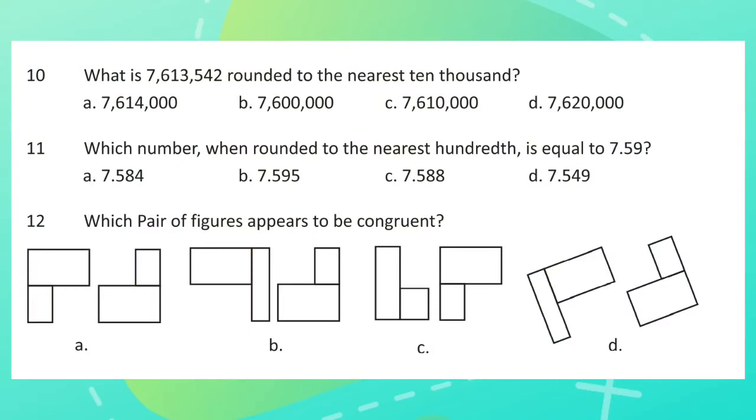Question 10: What is 76,13,542 rounded to the nearest 10,000? Question 11: Which number when rounded to the nearest hundredth is equal to 7.59? Question 12: Which pair of figures appears to be congruent?